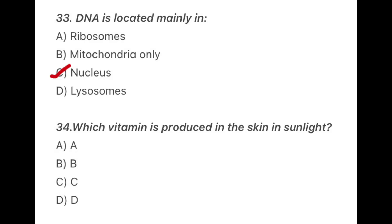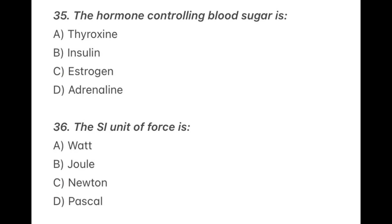Question 34: A very simple and basic question — which vitamin is produced in the skin in sunlight? The correct option is D — vitamin D. Question 35: The hormone controlling sugar level is — the correct option is B — insulin. Question 36: The SI unit of force is — the correct option is C — newton.